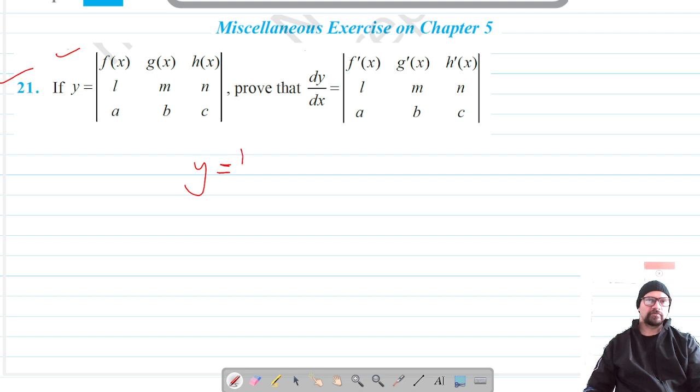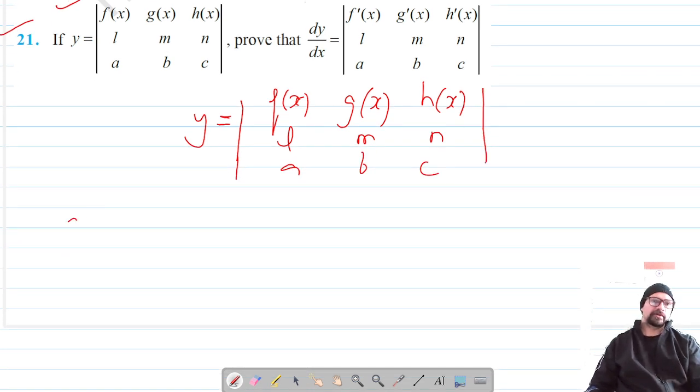So our function is y equals f(x) g(x) h(x), l m n, and a b c. Differentiating this with respect to x, we are going to differentiate the first row plus the determinant of the differentiation of the second row plus the determinant of the differentiation of the third row.